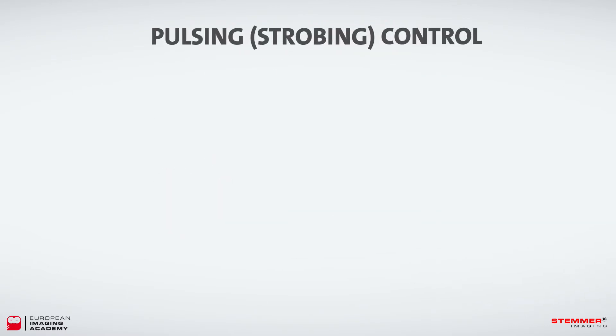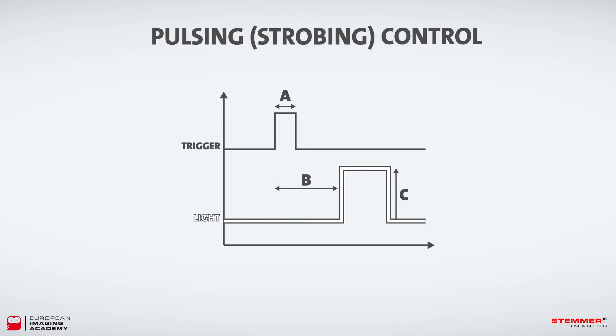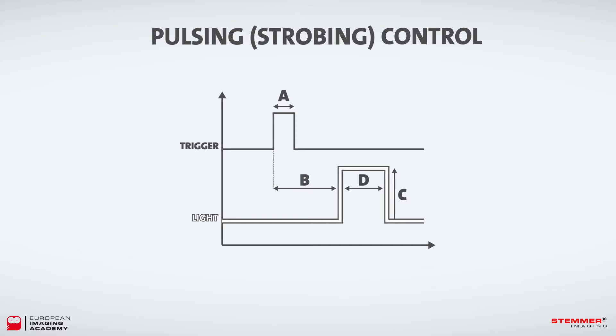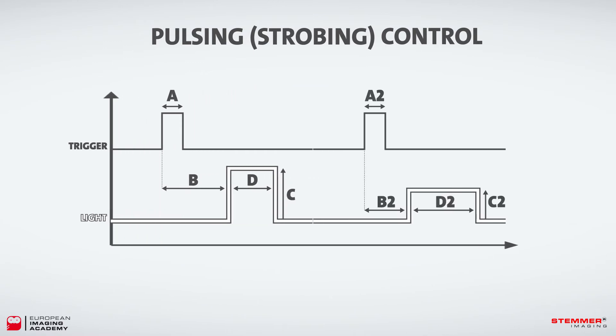Let's have a look at a digital timing diagram to help explain how it all works. When digital trigger pulse A is initiated, there can be a trigger delay B before the light is turned on at intensity C, for a duration of the pulse width D. Different profiles can be set up for subsequent triggers, so that they initiate different sequences from the first. This can be reset to ensure it always runs in the right order.